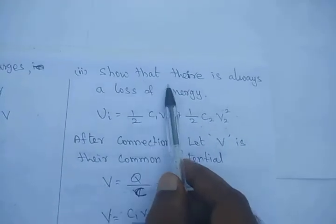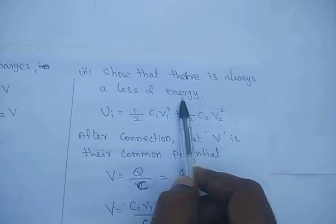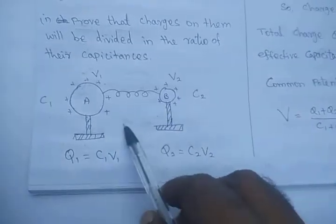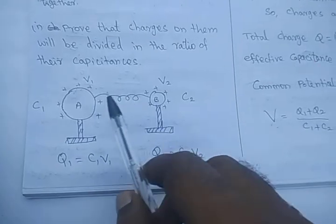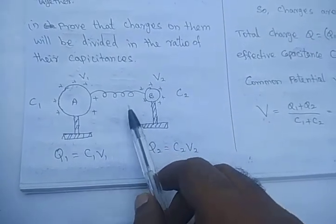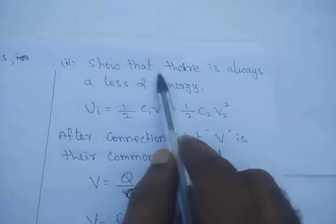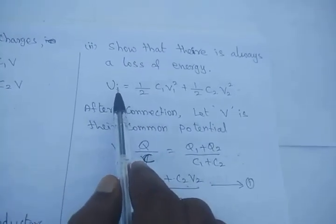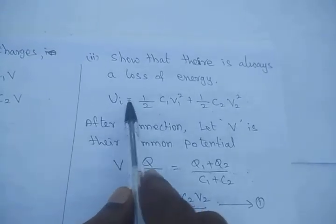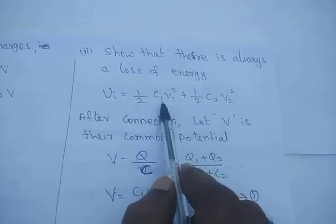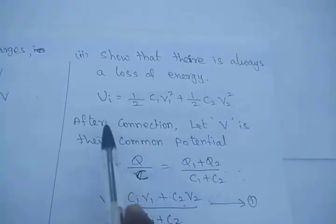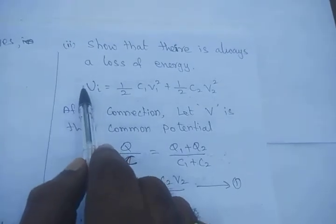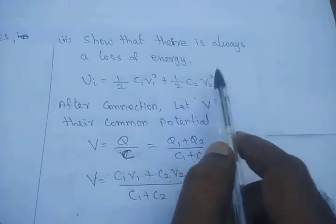Now we have to show that there is always a loss of energy during redistribution of charges. Whenever charges move from higher to lower potential there is energy loss. Before redistribution, the energy stored in capacitor C1 is ½C1V1² and in C2 is ½C2V2². So the initial energy before redistribution is ½C1V1² + ½C2V2².